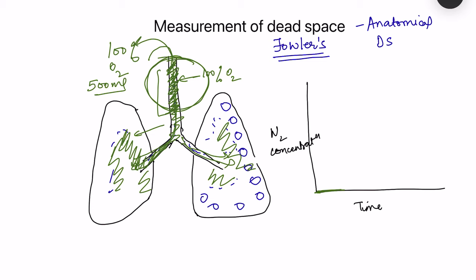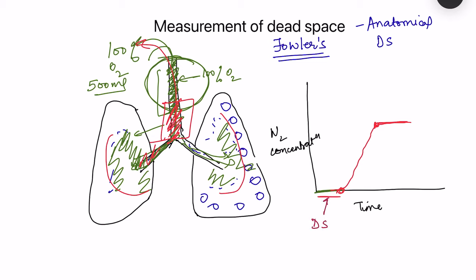As exhalation continues, air from deeper starts coming out — a mix of air from the respiratory passages and air present in the dead space — so nitrogen concentration starts rising. It rises until it reaches a point where concentration becomes almost constant, meaning now only alveolar air is coming out. So the first flat portion is pure 100% oxygen (dead space), then the rising portion is mixed alveolar air, and then the plateau is only alveolar air.